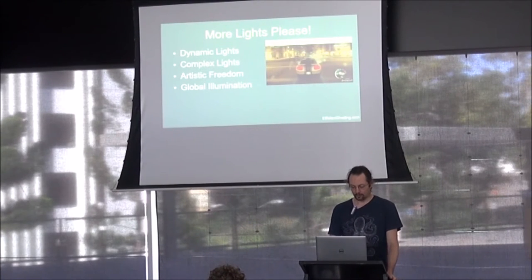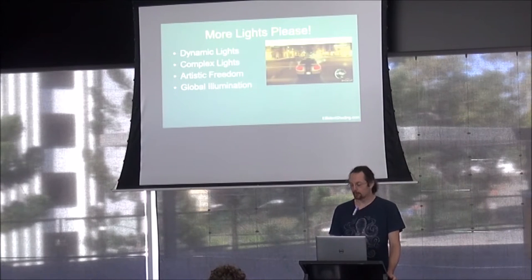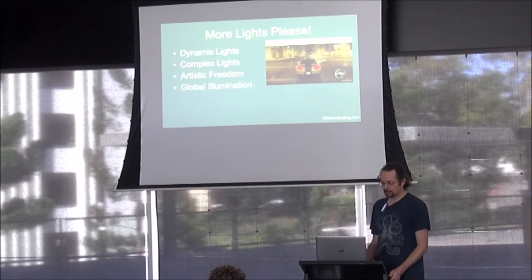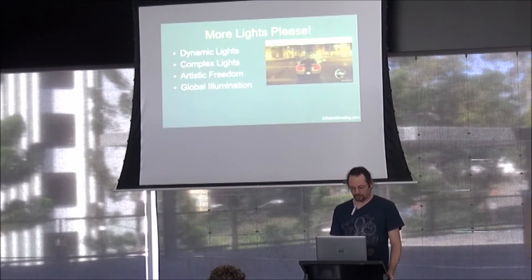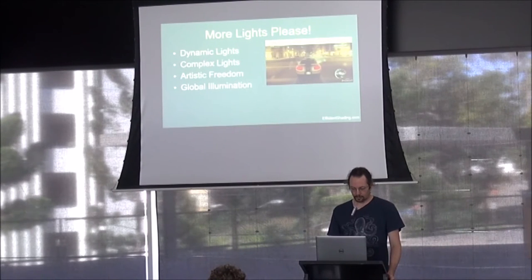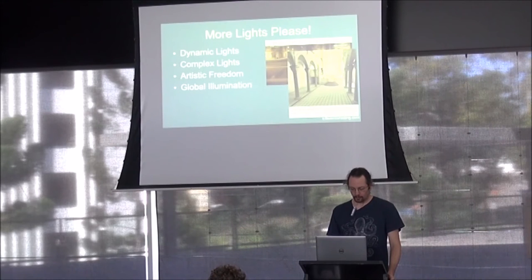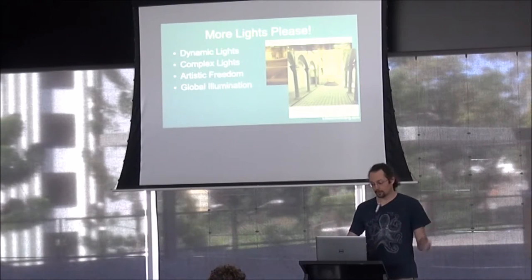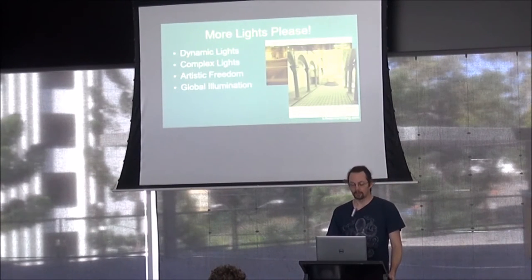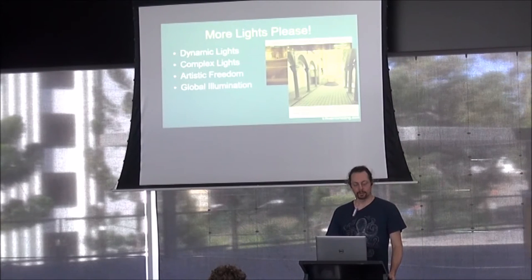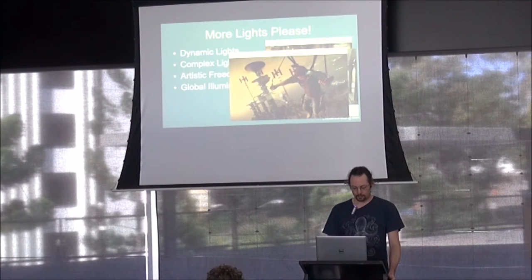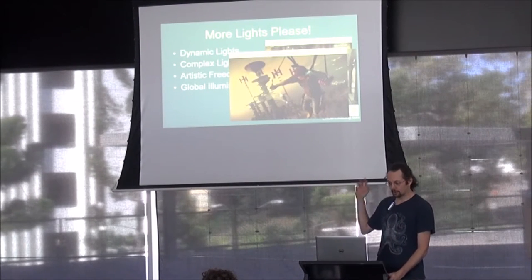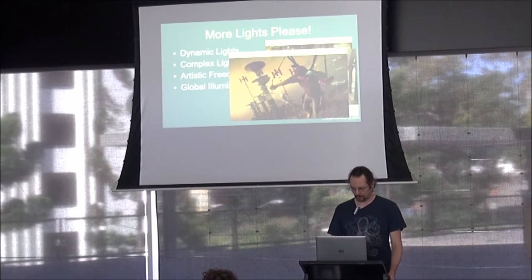This is from Need for Speed: The Run — they had about 2,600 lights in a scene to create a nice night-time look in their levels. If you have a ridiculous number of lights, you can use them to visualize global illumination techniques like photon splatting. And if you're doing Just Cause 3, you need lots of lights because you have cities full of them in the background.